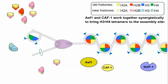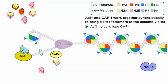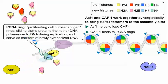ASF1 and CAF1 work together synergistically to bring H3-H4 tetramers to the nucleosome assembly site. It is believed that ASF1 helps to load CAF1 with new tetramers. CAF1 binds to PCNA rings, delivering the tetramers to the DNA.